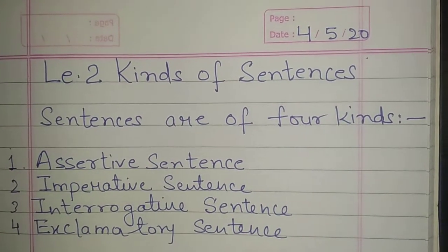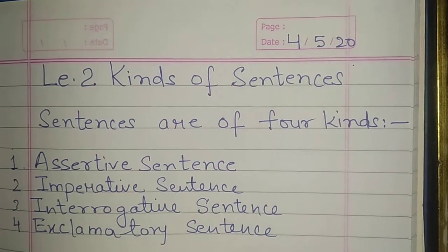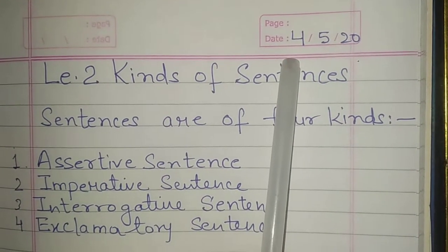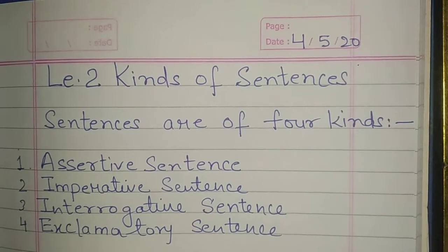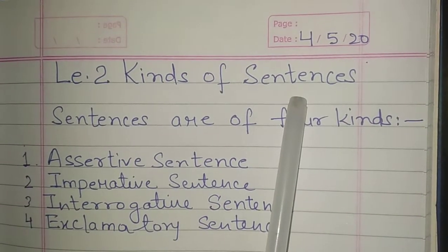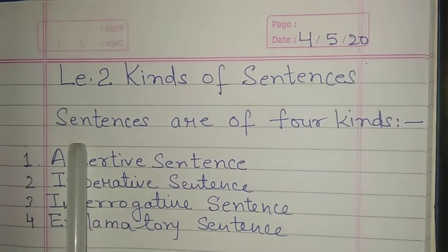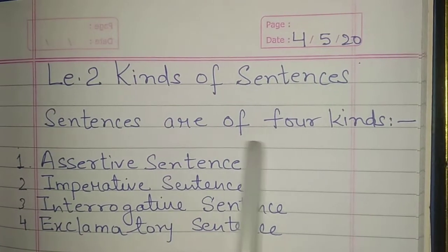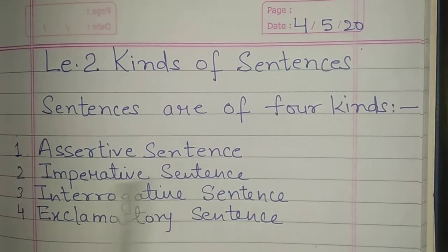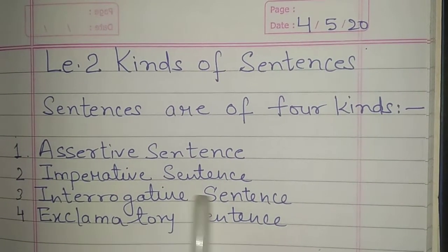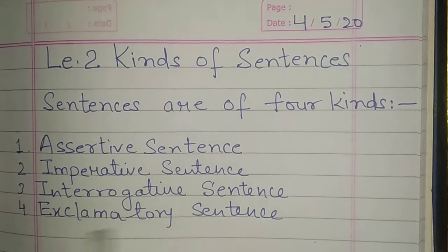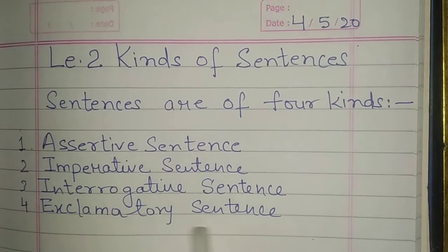Now let's see how to do your work in copy. First you will write the date: 4-5-20. Then lesson 2, kinds of sentences. Sentences are of 4 kinds: number 1 assertive sentence, number 2 imperative sentence, number 3 interrogative sentence, number 4 exclamatory sentence.